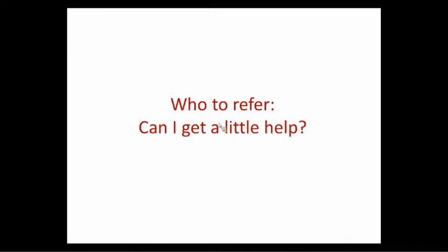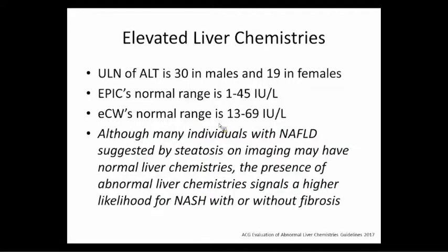Who do we refer? There are three streams to think about. The first is elevated liver chemistries. Some people are surprised, but the upper limit of normal ALT for males is actually 30, and for females it's 19. The reason it was historically much higher is because they didn't know what Hep C was when they established normals in the 1960s. Our Epic range goes up to 45, which is still not good enough. At some other institutions the upper limit is set as high as 69.